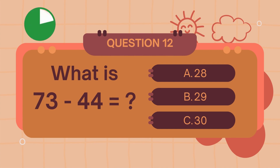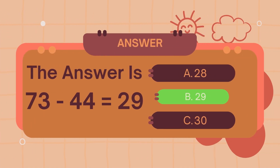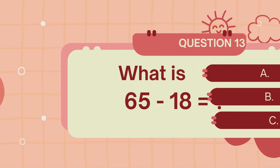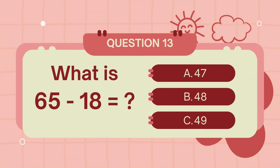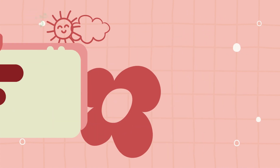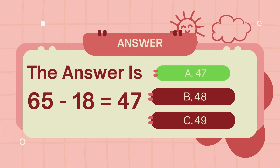The answer is 29. What is 65 minus 18? The answer is 47.